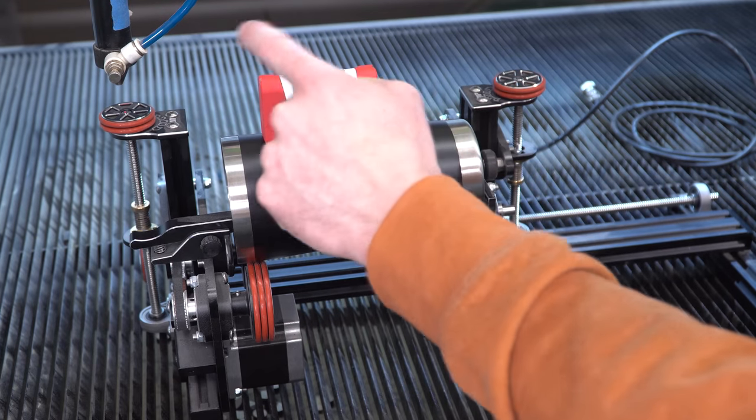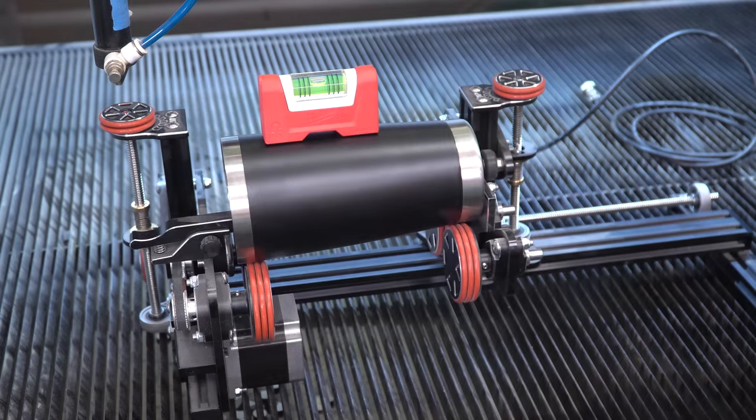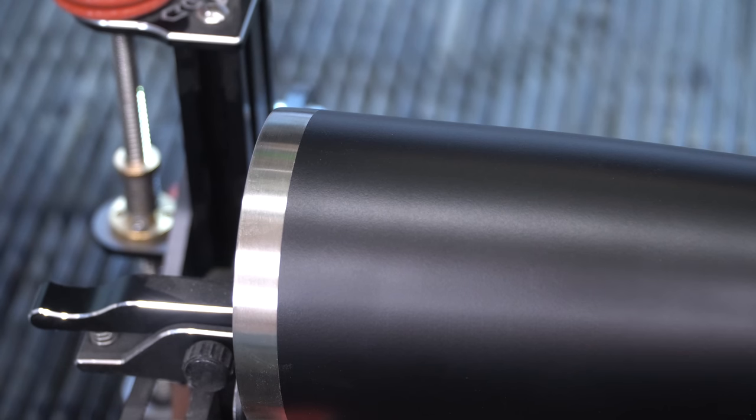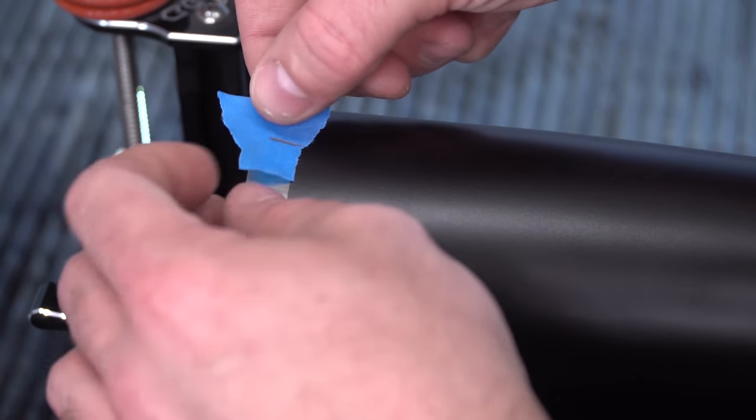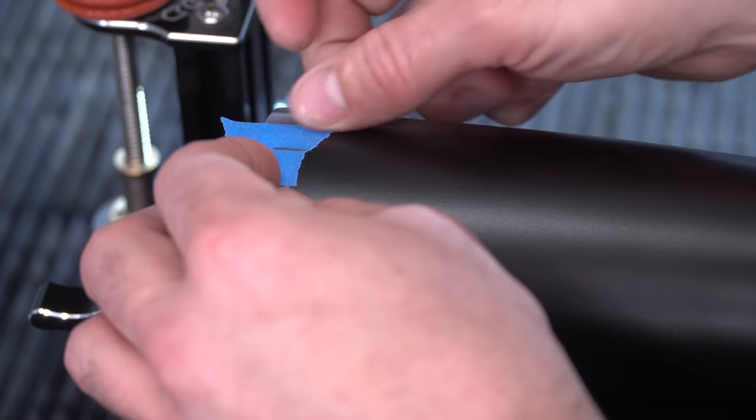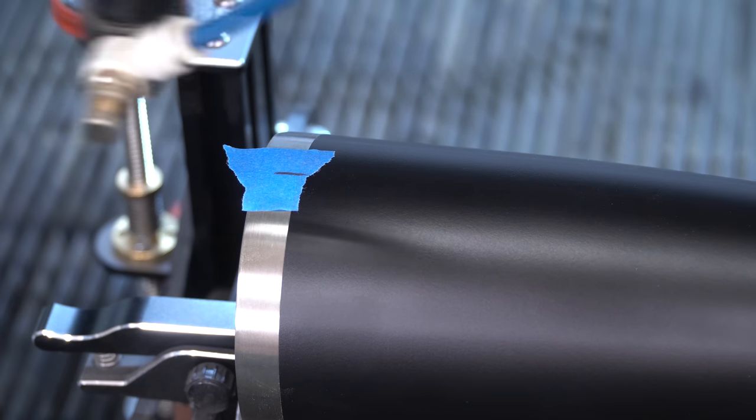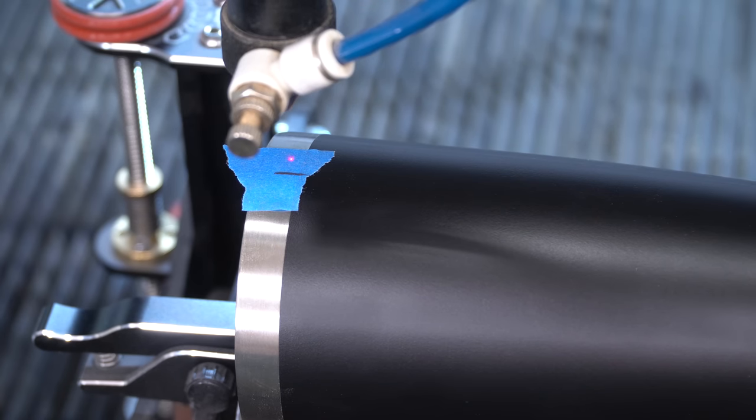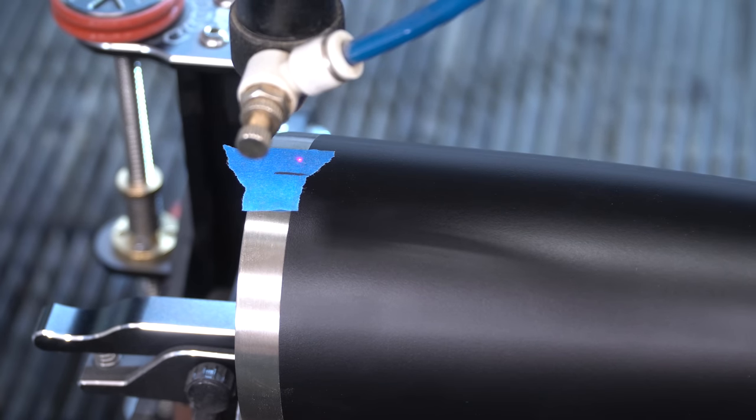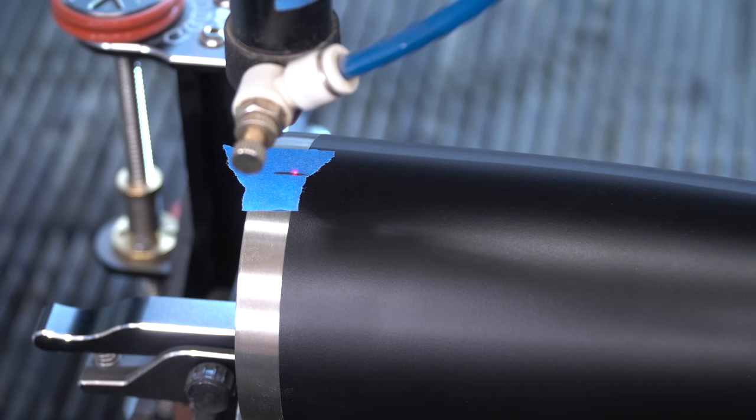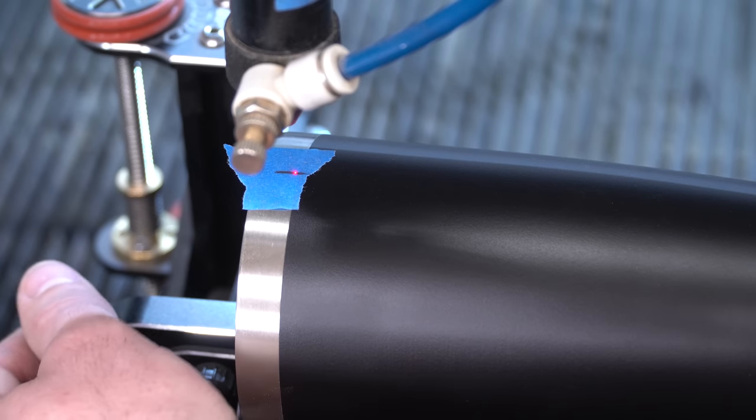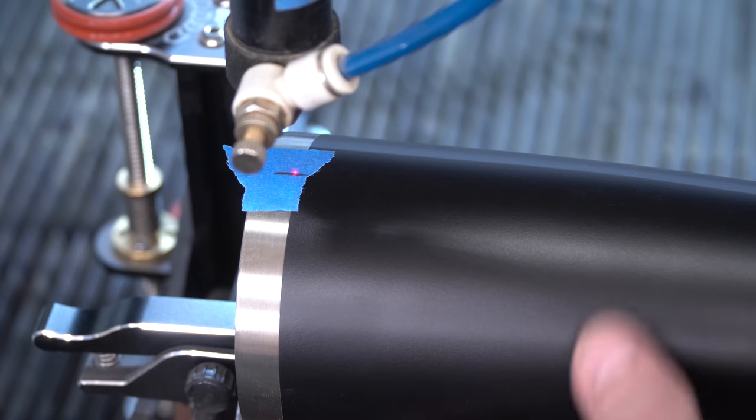Now we just have to get the laser head over the top center of this thing. And to do that I just kind of eyeball what I think is the top most point of this. And I put a piece of tape with a line on it so that I know it's a little bit more precise than just guessing. So we're just going to put our dot right on that line. That's pretty darn close. I can just rotate it. We're good.